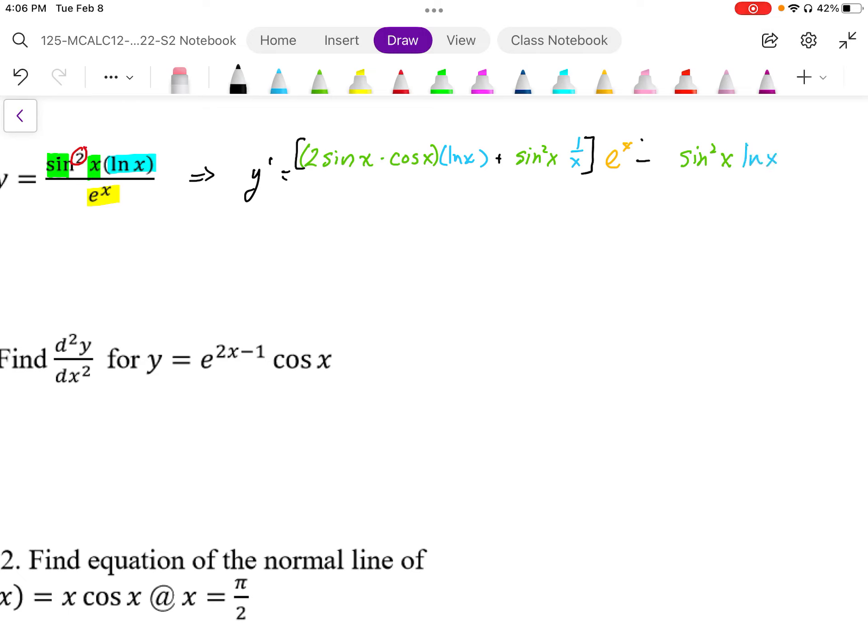Okay, so that represents the first part, the undifferentiated numerator, and then I need to apply the derivative to the denominator. Well, the nice thing about it is, it just gives me e to the x. And then when I differentiate, I need to make sure I square the denominator.